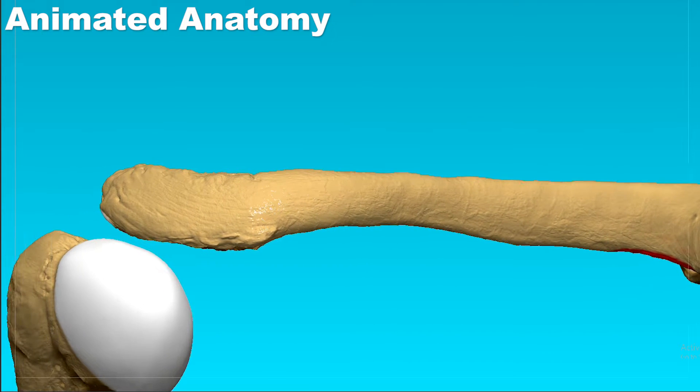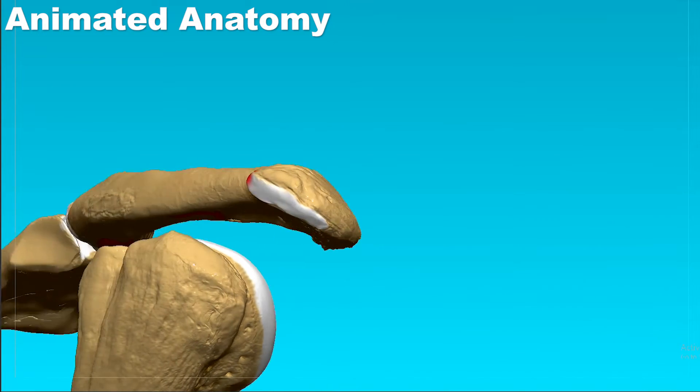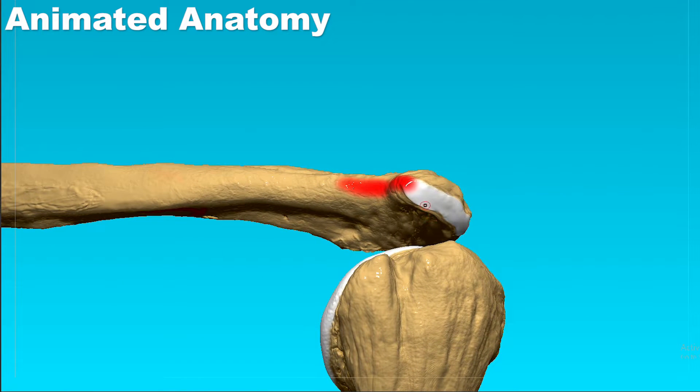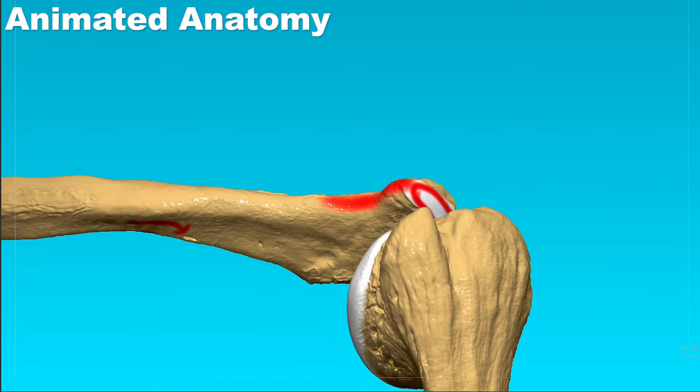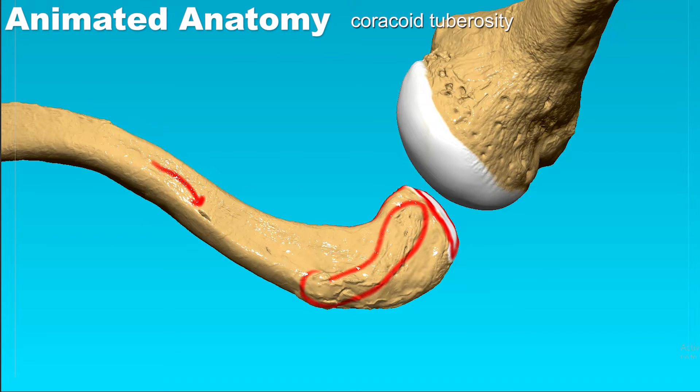The lower surface keeps entertaining us with details, and that does not change at the acromial end either. Here we can see the articular surface for the acromion of the scapula, and over here we can see the coracoid tuberosity, which consists of the conoid tubercle and the trapezoid line.